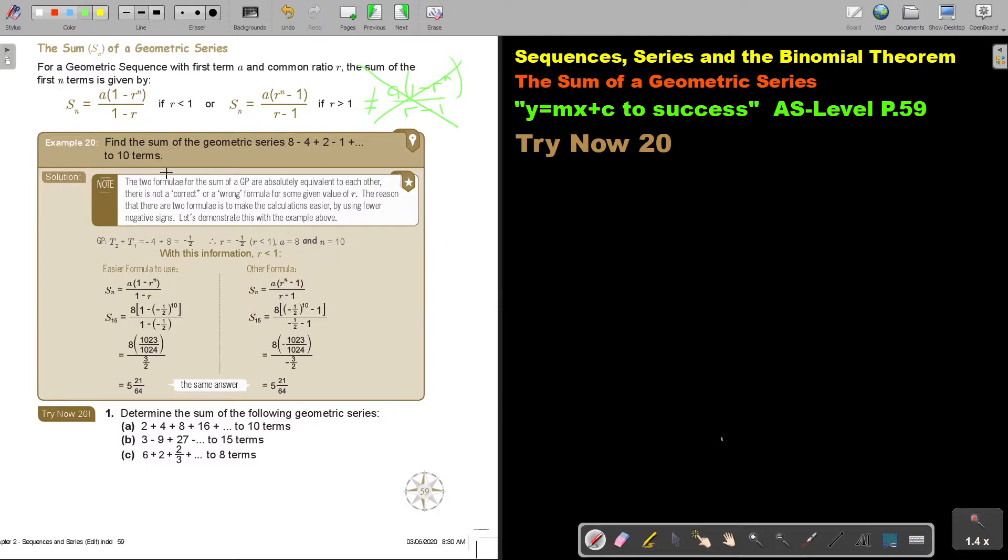The two formulas, this one and this one, for the sum of a GP, are absolutely equivalent to each other. There is not a correct or a wrong formula for some given value of R. The reason that there are two formulas is to make the calculation easier by using fewer negative signs. Let's demonstrate this with the example above.